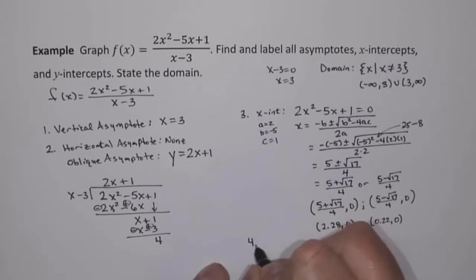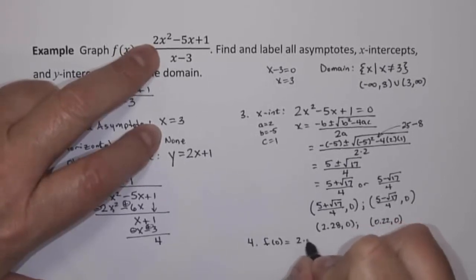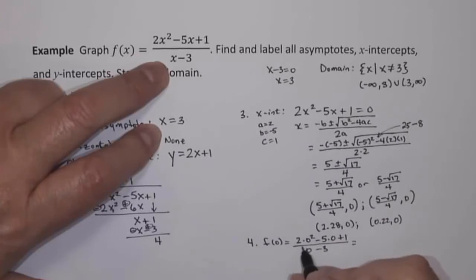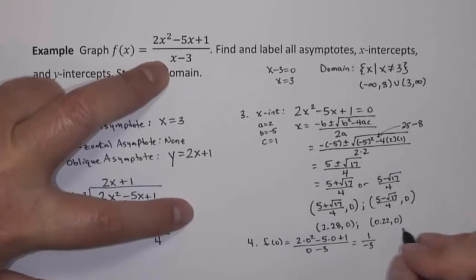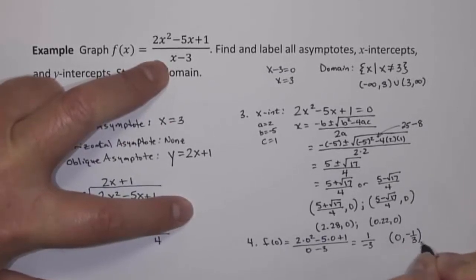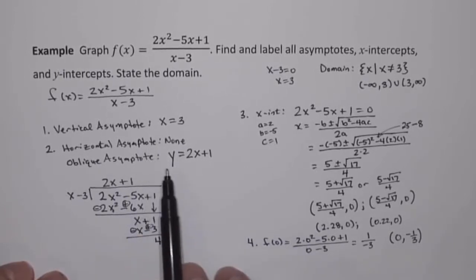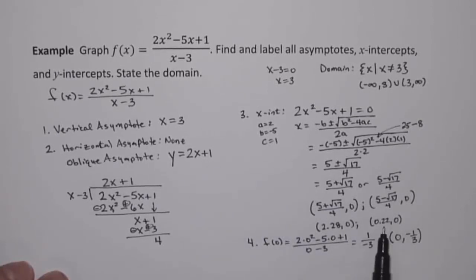For the y-intercept, we find f of 0: 2 times 0 squared minus 5 times 0 plus 1, over 0 minus 3. That gives us 1 over negative 3, so our y-intercept is negative one-third, meaning the point 0, negative one-third. To summarize: we have a vertical asymptote of x equals 3, no horizontal asymptotes, an oblique asymptote of y equals 2x plus 1, x-intercepts at approximately 2.28 and 0.22, and a y-intercept of negative one-third. Now we'll put that all together and graph it.